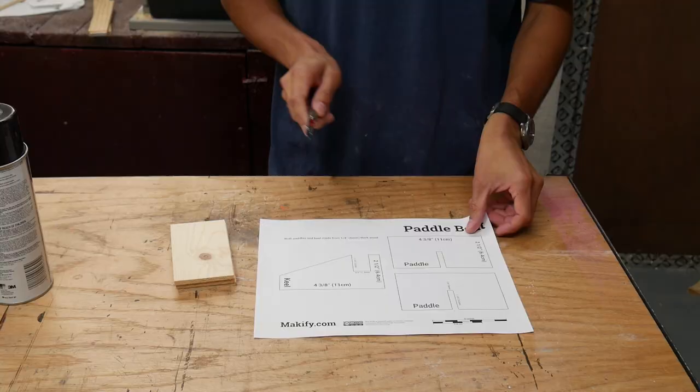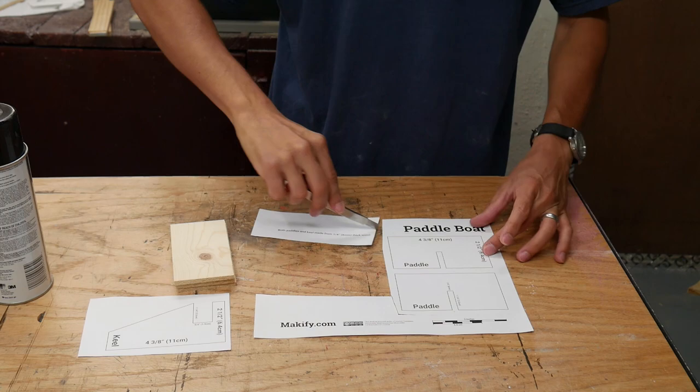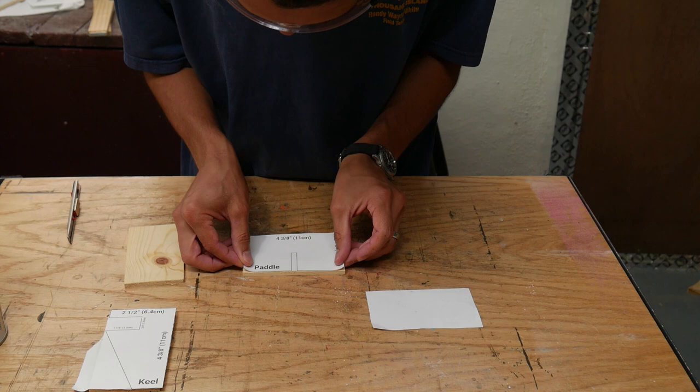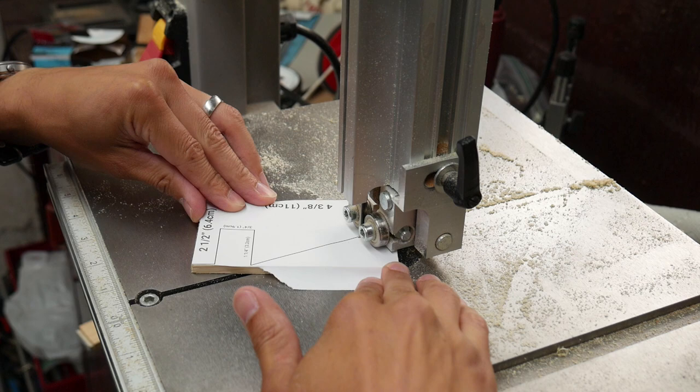Then I cut out the templates for the keel and paddle pieces and used spray adhesive again to stick them to the three small pieces of wood. I went back to the bandsaw and cut those pieces out.